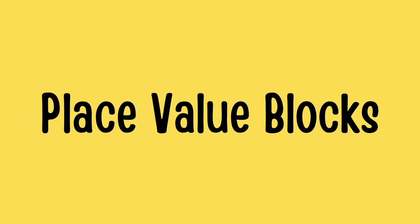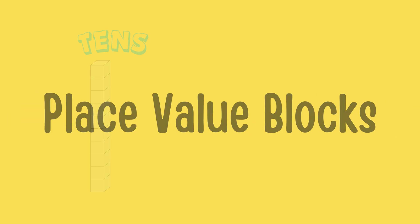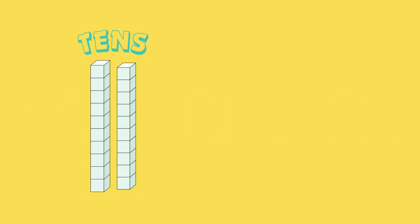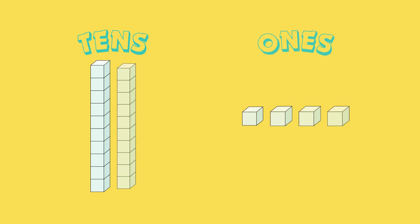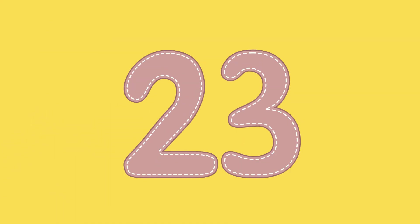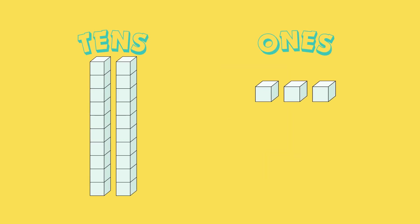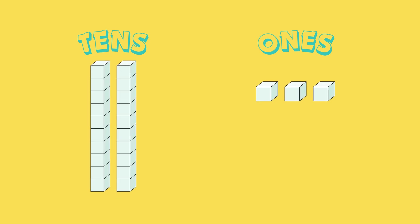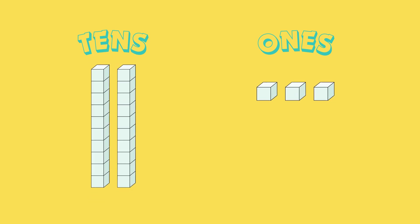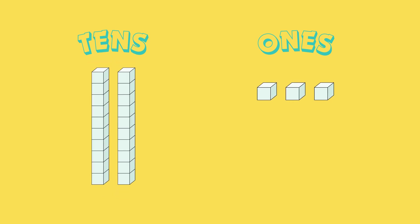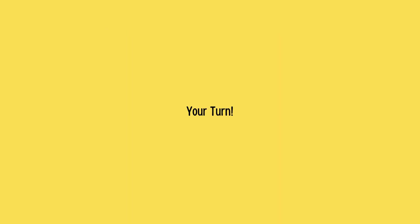Let's use blocks to make it more fun. Each big block is a 10, and each small block is a 1. Can you make the number 23 with blocks? Great job! 2 big blocks for 10s, and 3 small blocks for ones. 20 plus 3 equals 23.